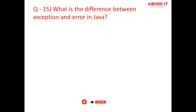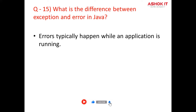Question number fifteen: What is the difference between exception and error in Java? Errors typically happen while an application is running. For instance, OutOfMemoryError occurs in the JVM when it runs out of memory. On the other hand, exceptions are mainly caused by the application itself. For instance, NullPointerException happens when an application tries to access a null object.